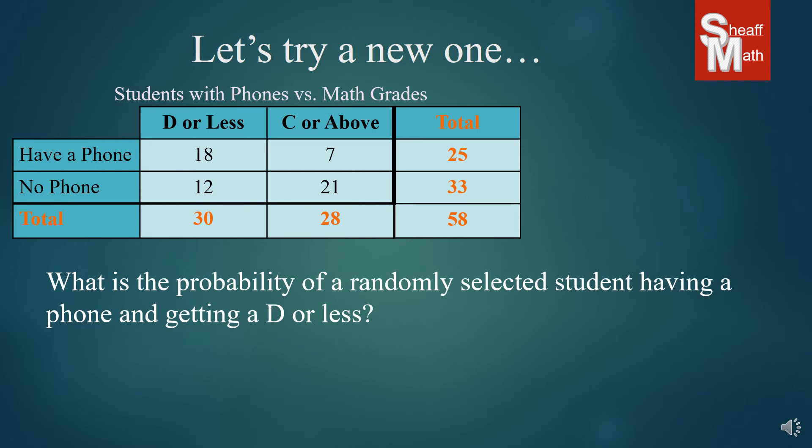And the question says, what is the probability of a randomly selected student having a phone and getting a D or less. So there's our having a phone row, our D or less column, and we have 18 of the surveyed kids. There were 58 that were surveyed, and so 18 over 58 is our probability, which simplifies to 9 over 29 in its lowest terms, and that is our probability.